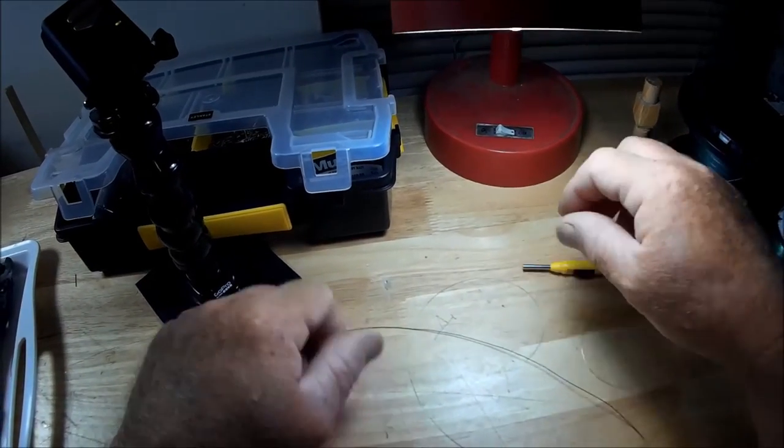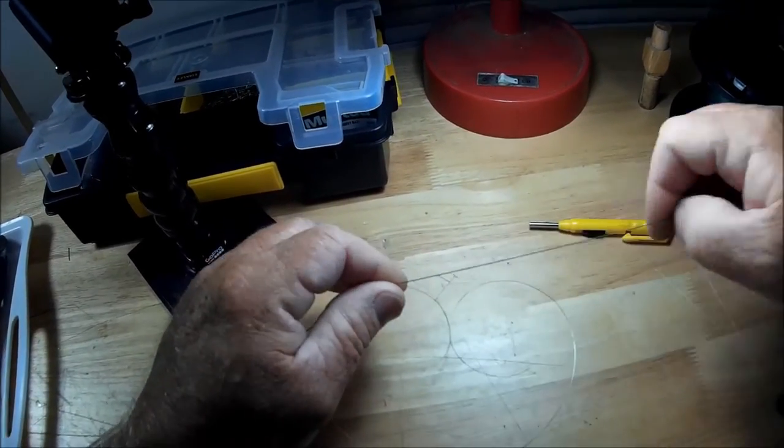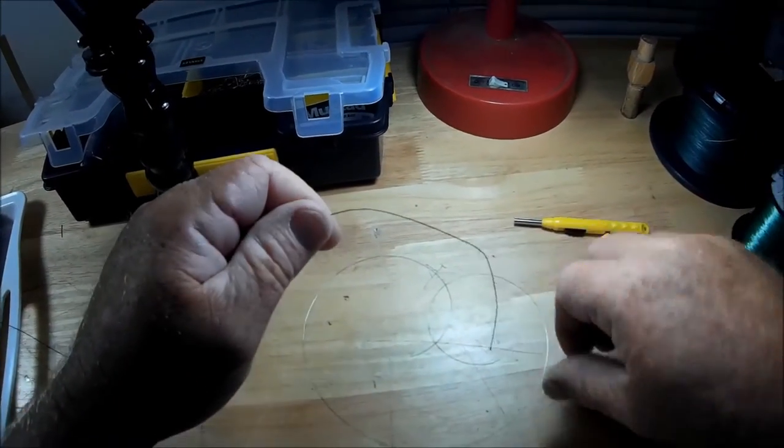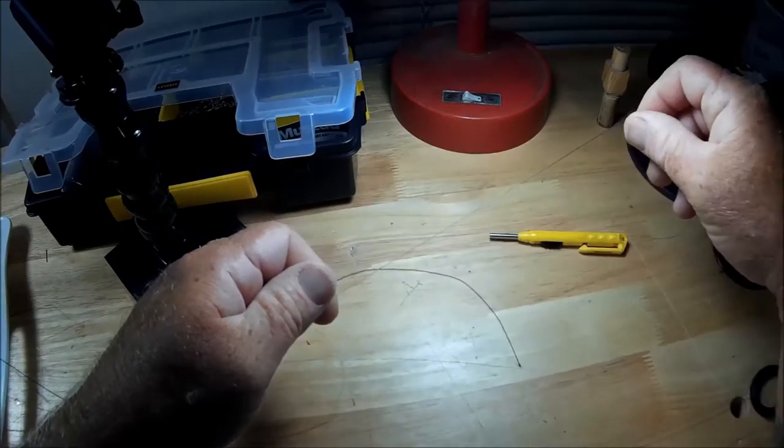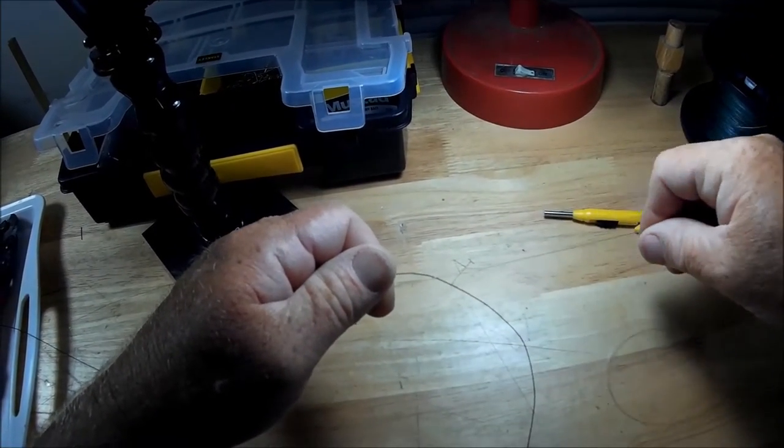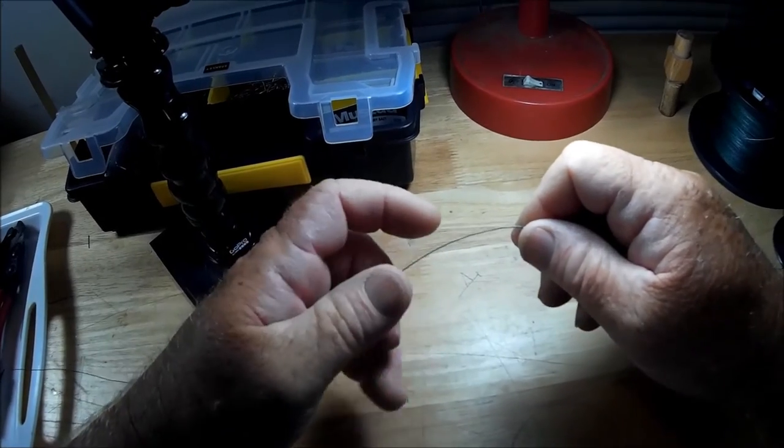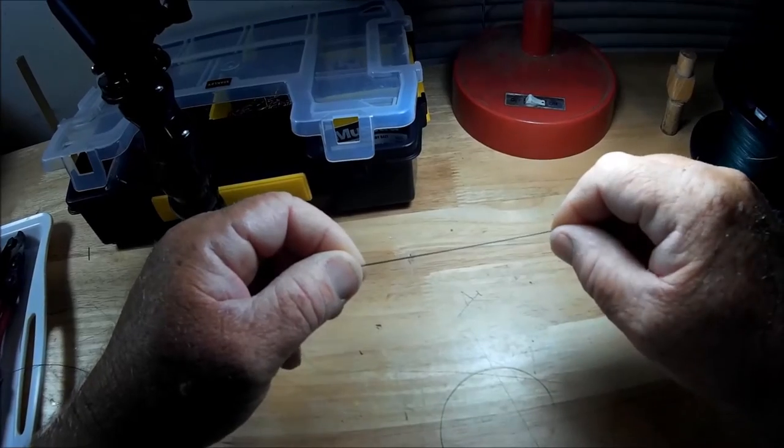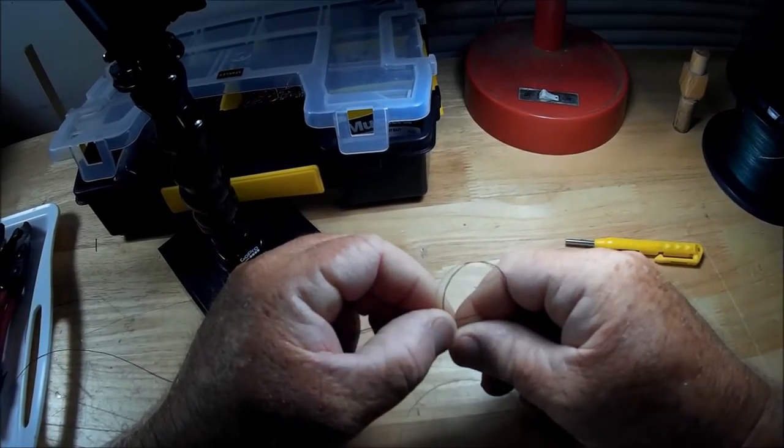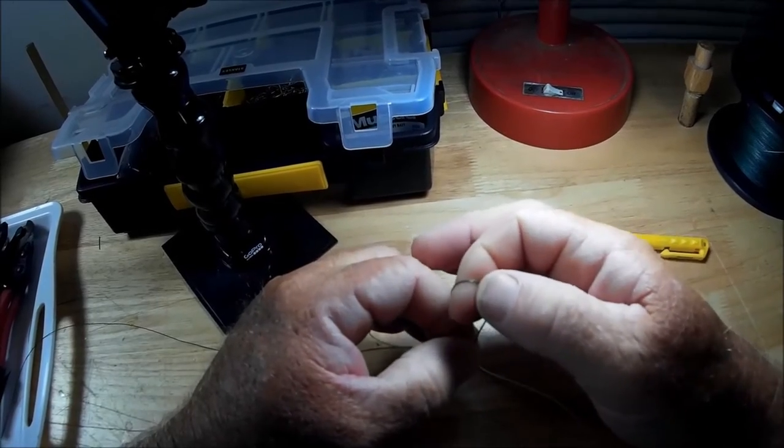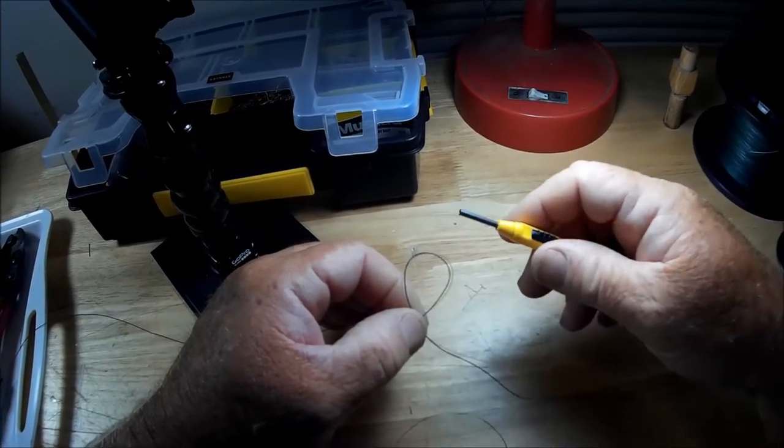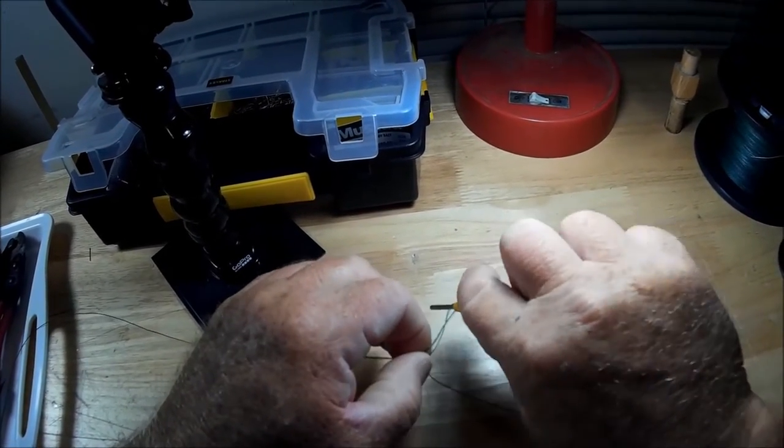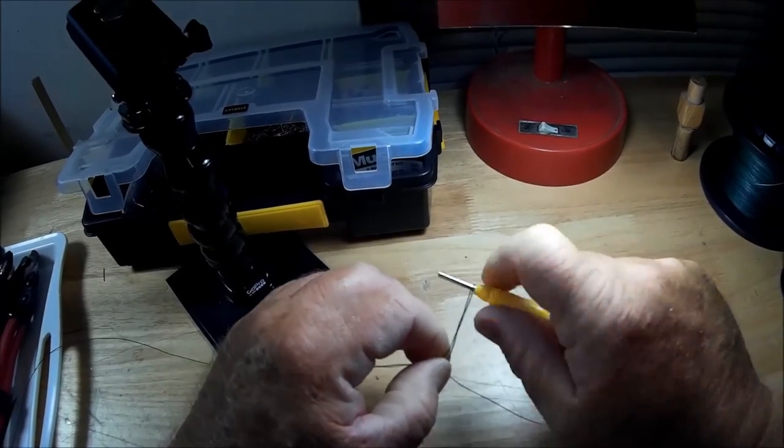Here's what you do. You take braid, you take mono which is going to be your leader. It's as simple as doing this. Take the two, put them together, form a loop, take your tool, go in here. Go four times around.